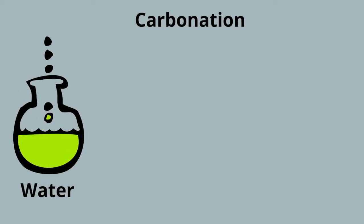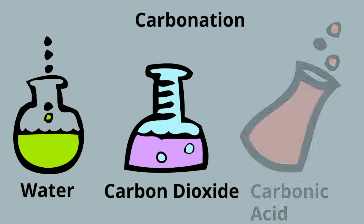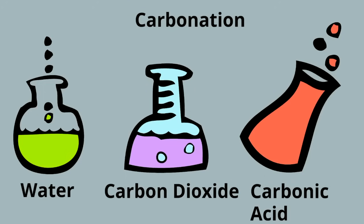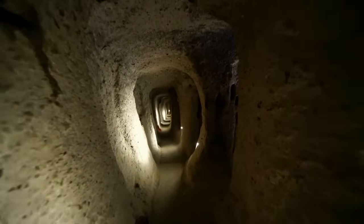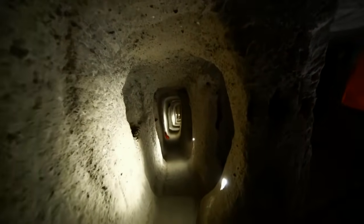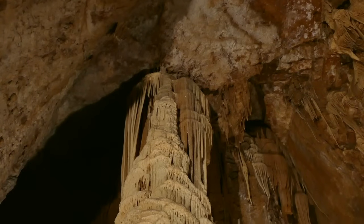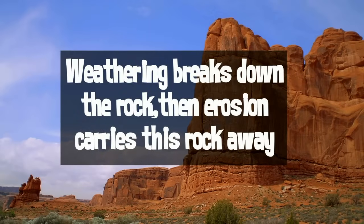And finally, carbonation. It's the process of mixing water with carbon dioxide to make carbonic acid. This acid then breaks down and weakens rocks. Caves may be formed by carbonation dissolving limestone. Rainwater picks up carbon dioxide from the air and, as it percolates through the soil, slowly dissolves out the limestone, breaking down the rock, then erosion carries the rock away.